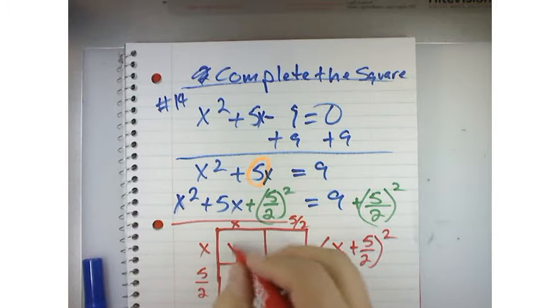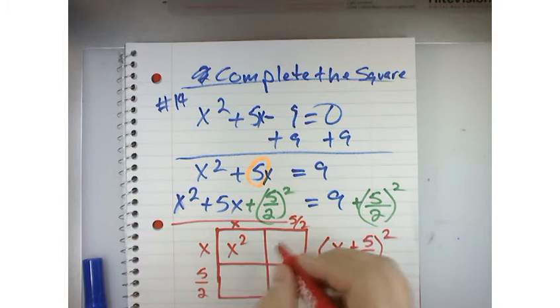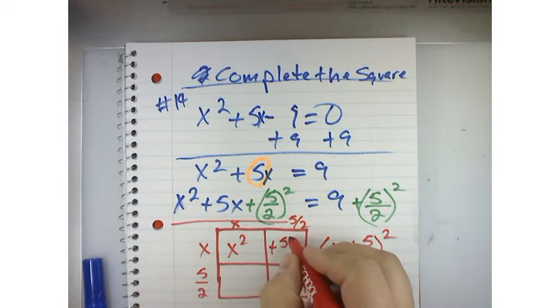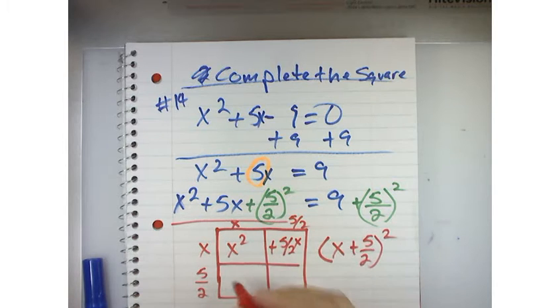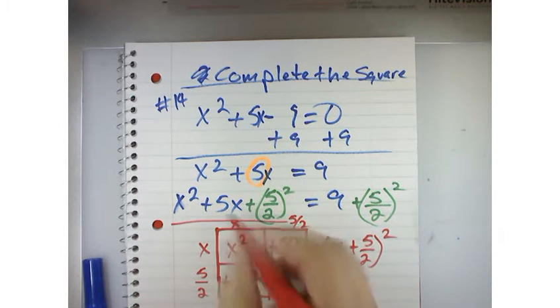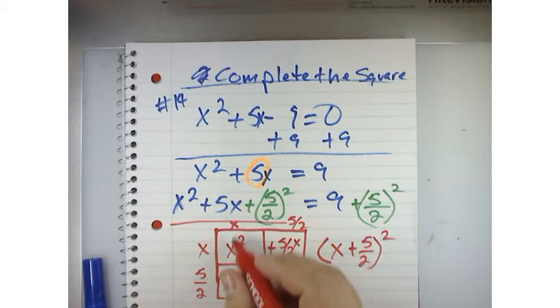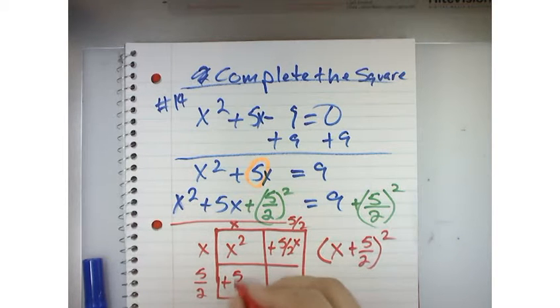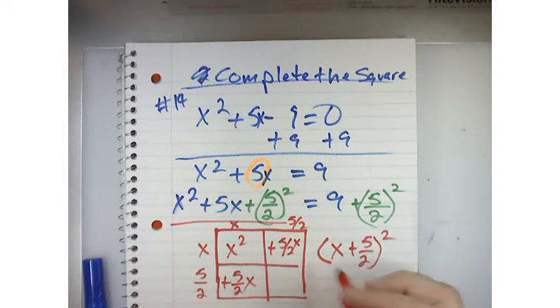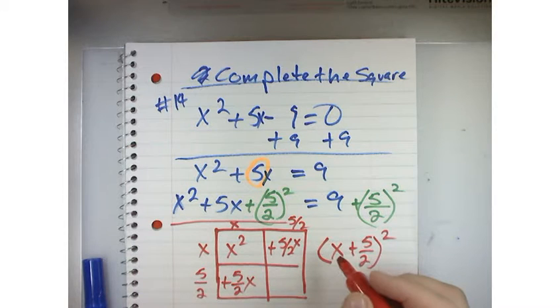I get x squared. I get plus 5 halves x here, just multiplying the row by the columns, 5 halves x here, and then what's 5 halves times 5 halves?